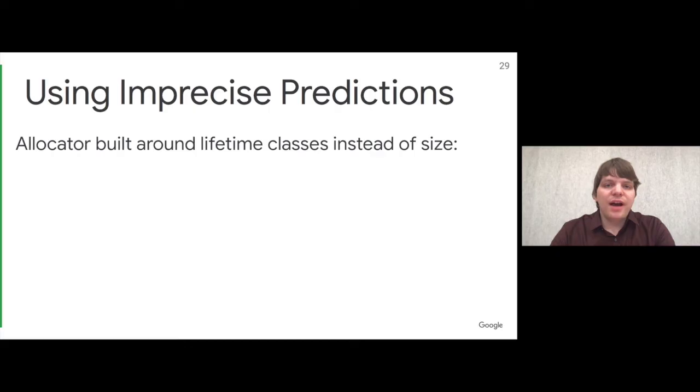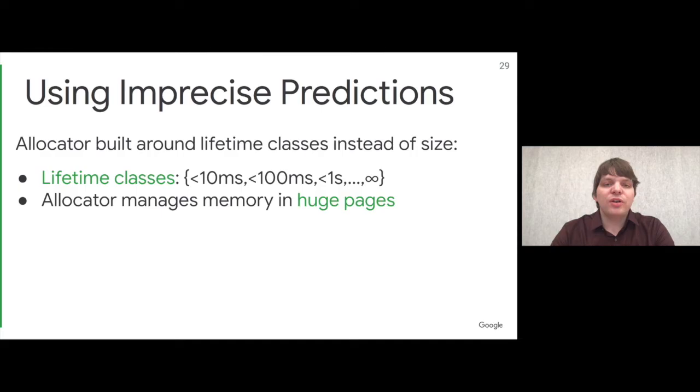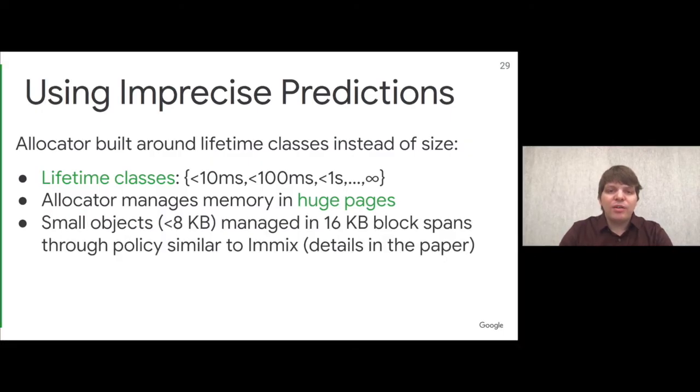LAMA is the first memory allocator entirely built around lifetime classes instead of size classes. A lifetime class is a particular range of lifetimes, such as smaller than 10 milliseconds, 10 to 100 milliseconds, 100 milliseconds to a second, and so on. Our allocator is also built around huge pages, only allocating and returning huge pages to the operating system. Like most memory allocators, it consists of a small object allocator for objects smaller than a kilobyte, and a global allocator. I'll focus on the global allocator.